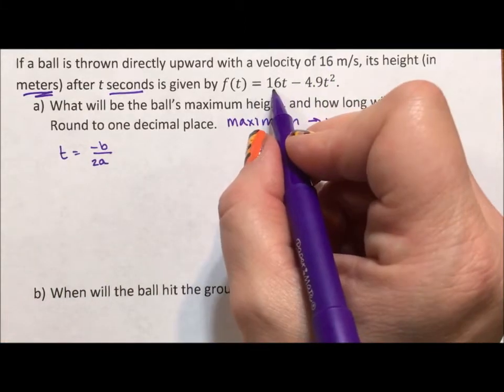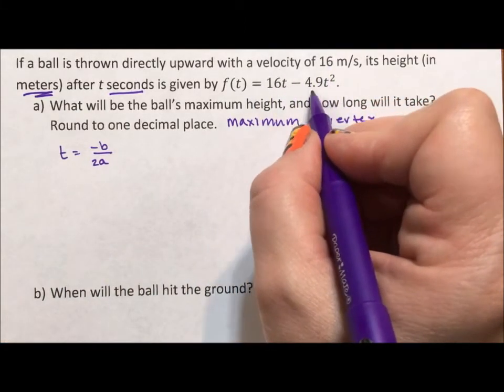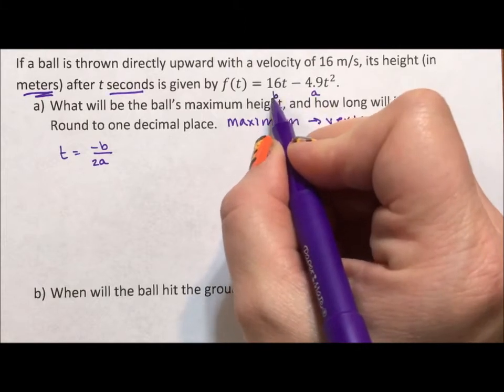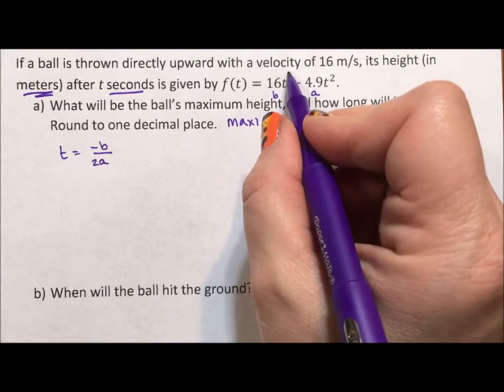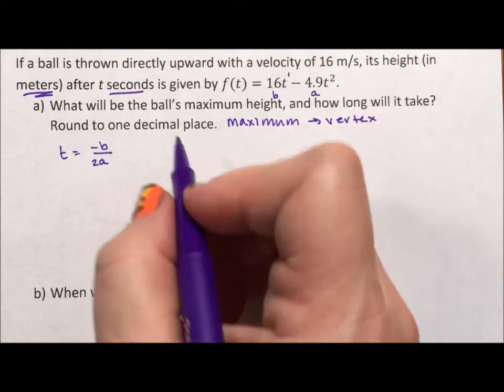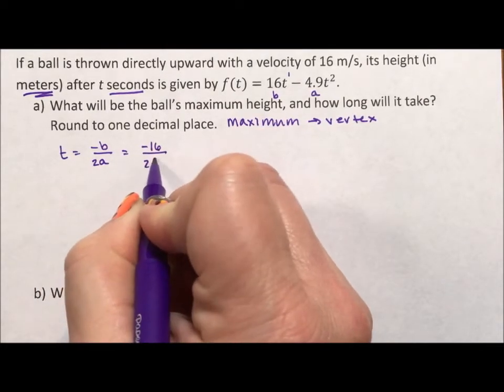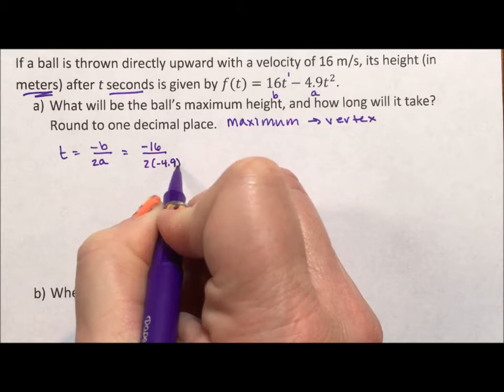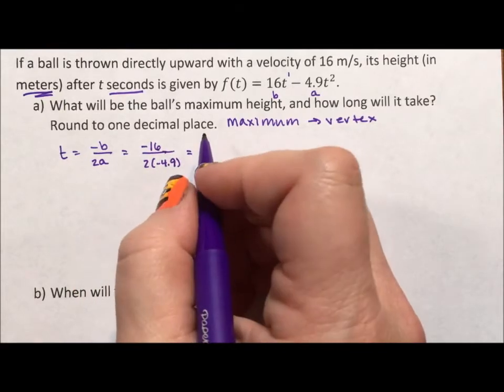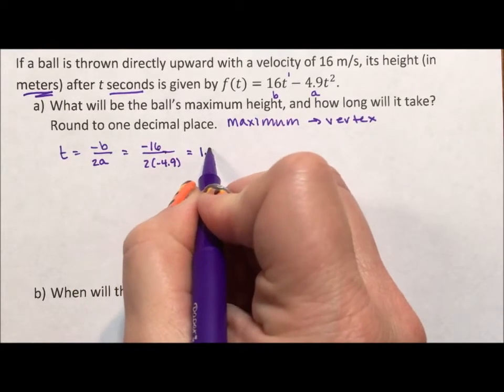Alright, a is not the first term. a is the number multiplied to the squared variable, and b is the number multiplied to the variable to the first power. So negative b over 2a is going to be negative 16 over 2 times negative 4.9. And it says round to one decimal place, so this is going to become 1.6.